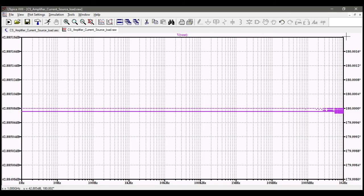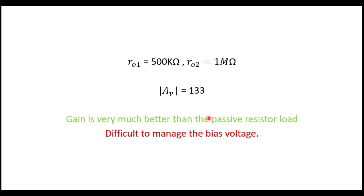So finally, what's our conclusion? The gain here is very much better than the passive resistor load, so there is a huge increase in gain for which we are always greedy about. But the problem here is it's very difficult to manage the bias voltage which we are giving to the PMOS in real circuits, because if we vary the bias voltage by a little, the variation in the gain is very large.